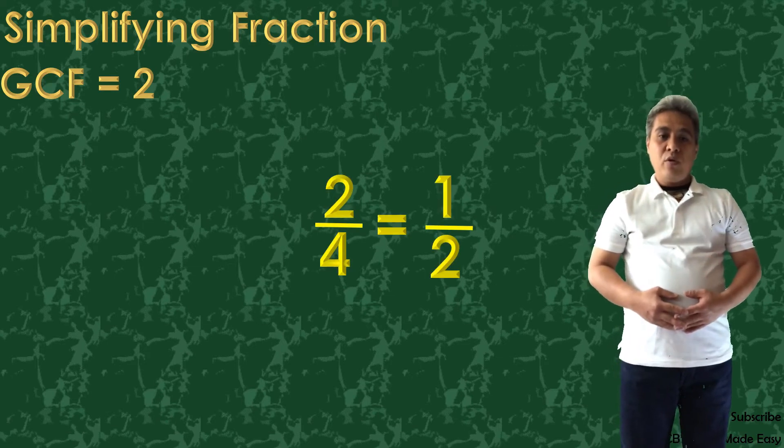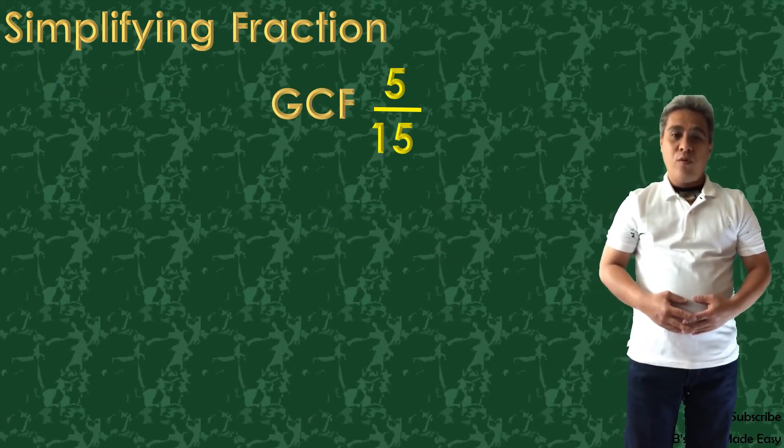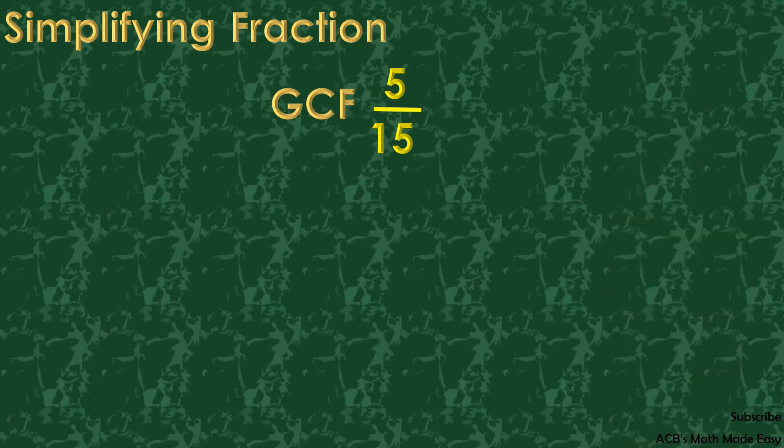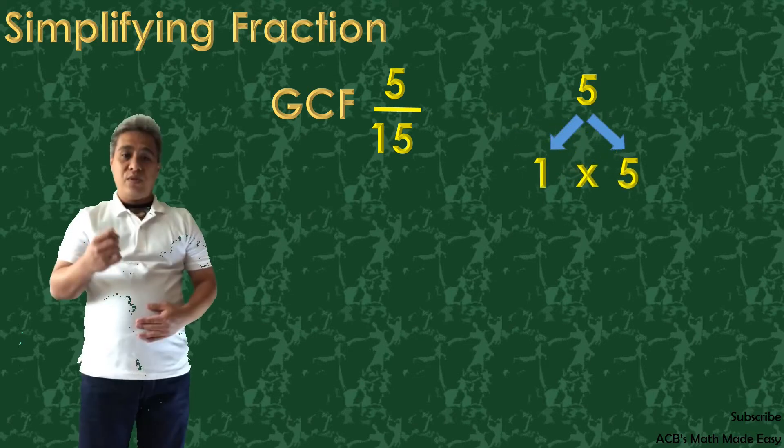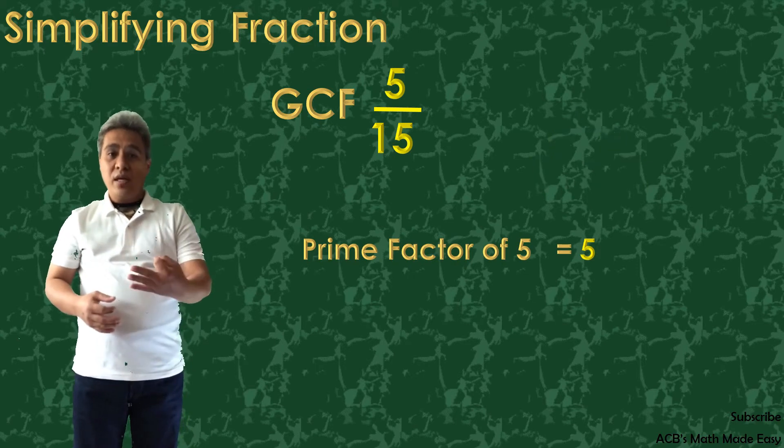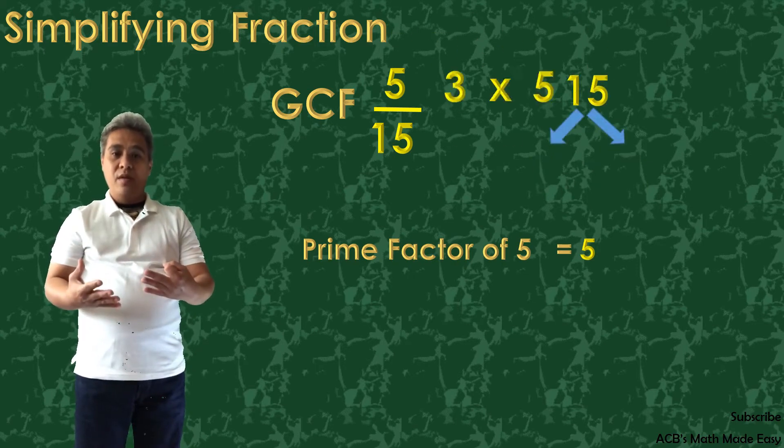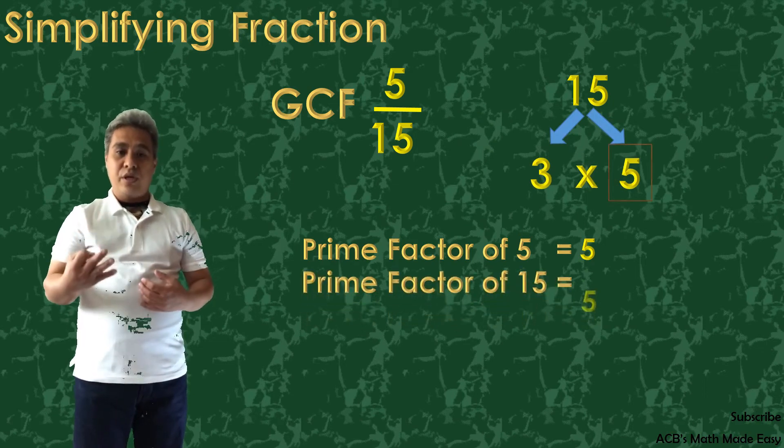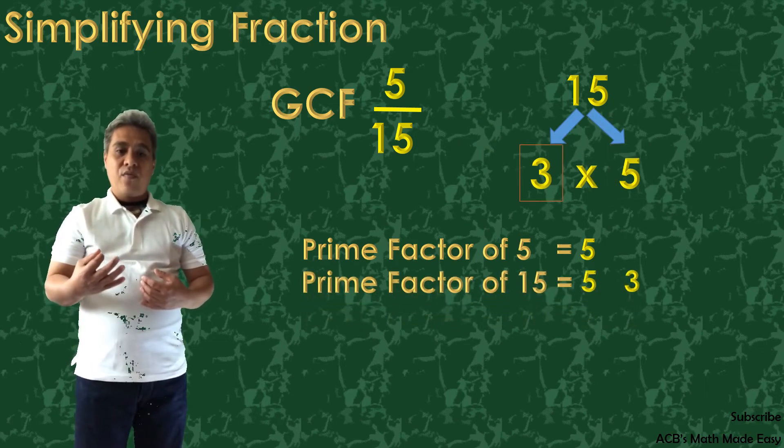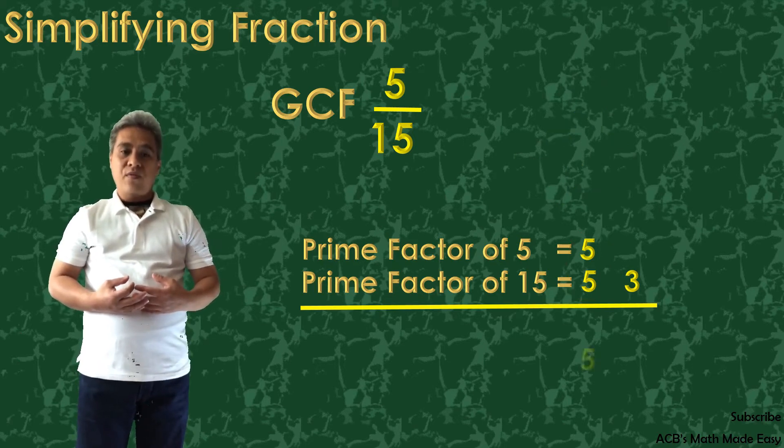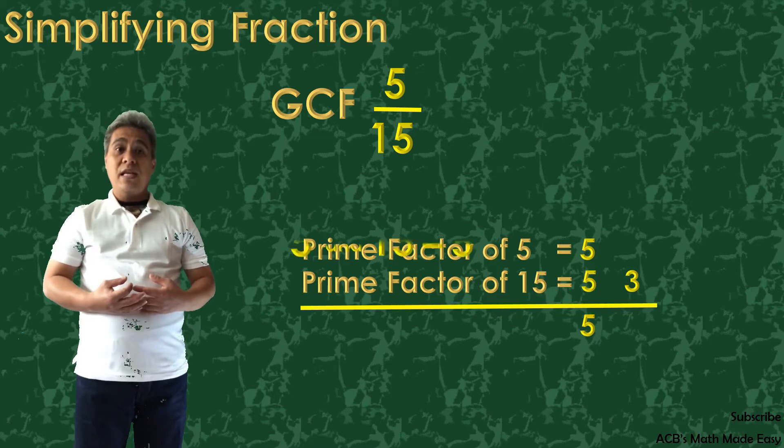We are now going to simplify another fraction, 5 over 15. 5 can be factored out by 1 times 5. The prime factor of 5 is 5 only. 5 and 15 has only one common factor of 5. So, the GCF of 5 and 15 is 5.